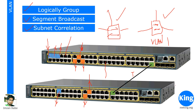There are two encapsulation methods for trunking: dot1Q, which is the IEEE open standard, and ISL (Inter-Switch Link), which is a Cisco proprietary protocol. In today's world, all modern switches use dot1Q, so when you configure a trunk on modern switches, you may not even see an encapsulation command because dot1Q is the default. When you make a port a trunk, it automatically gets dot1Q encapsulation.